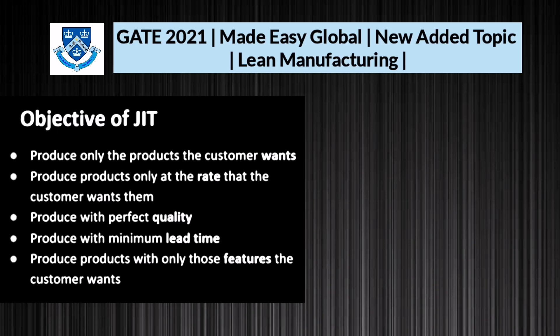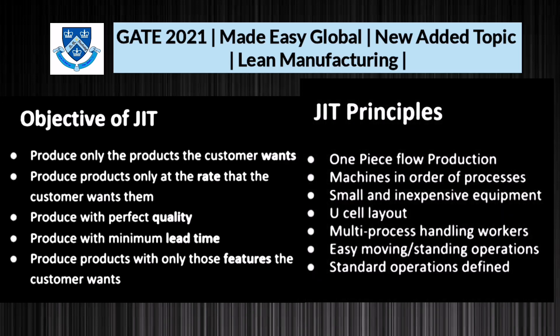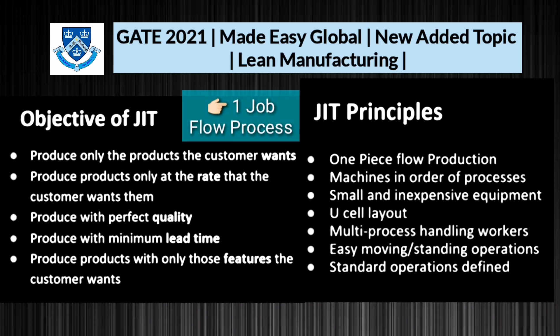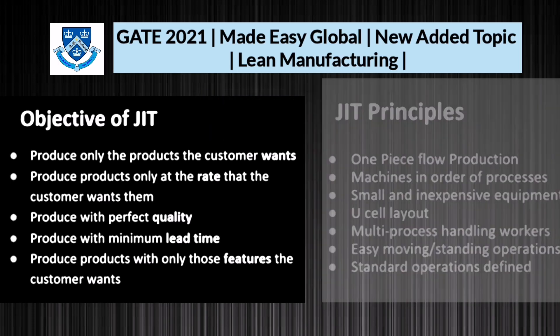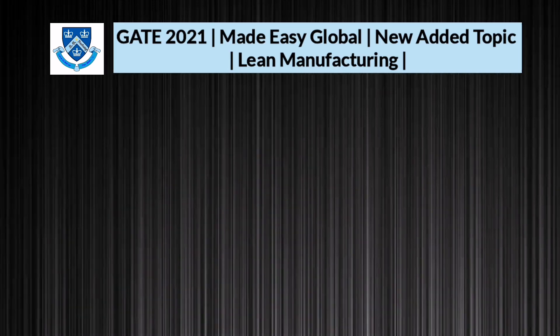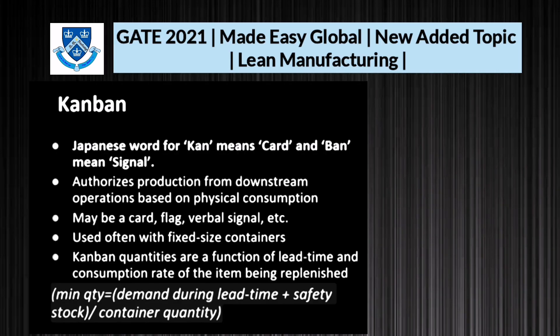JIT principles include: one-piece flow production, machines arranged in order of process, small and inexpensive equipment, appropriate layout, multi-process handling workers, easy movement, and standard operations defined. These are small details, but multiple-choice questions in the GATE examination may be asked based on these topics, so note down every point from the slides.